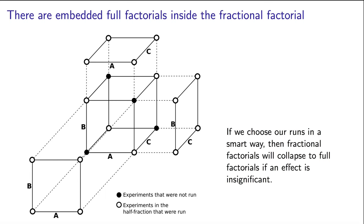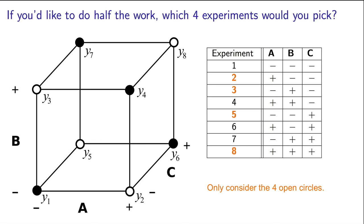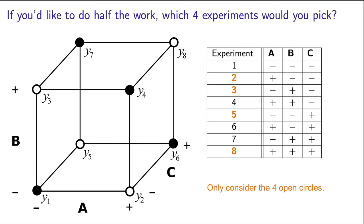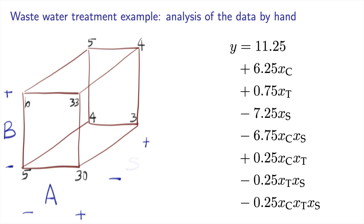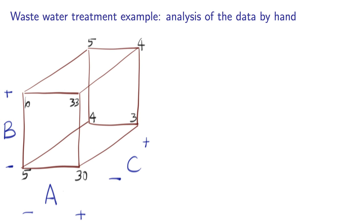So now, let's imagine that we've run only these 4 experiments. I'd like to show you how we could analyze the data, and I'm going to use the water treatment example again. I hope you don't mind if I rename the factors to A, B and C. I'm doing this because I want to use the water treatment example that you're comfortable with, but at the end, I want to extend what we learn here today to any system, and A, B and C are the most generic way to do that.